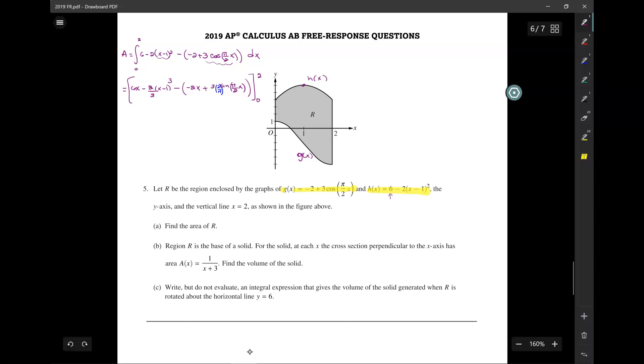You have to plug in x equals 2 first. So here you get 6 times 2, this is 12, minus 2 over 3 times 1, minus negative 4, plus 6 over pi, sine of pi, that'll be 0. So all this minus, now you plug in the 0. So we get 0 here, plus 2 over 3, minus 0, and 0 here as well. And finally, this will be 44 over 3. Okay, so that's A.